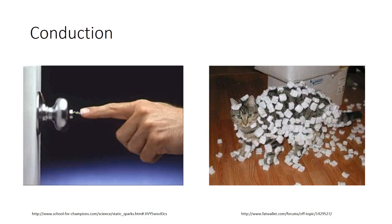Conduction is when a charged object touches another object, leading to a flow of charge between them. In the winter, if you walk around on carpeting with socks on, you're going to build up a negative charge through friction. Then, if you touch a conductor like a metal doorknob, you'll dissipate your electric charge. In this scenario, you charge the doorknob through conduction — you were negatively charged and you gave your extra electrons to the doorknob.